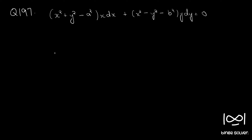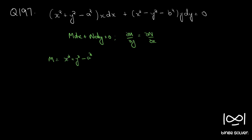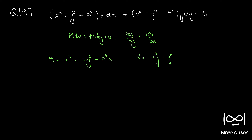The given equation is in the form M dx + N dy = 0. First we check whether the given differential equation is exact using the necessary and sufficient condition: ∂M/∂y = ∂N/∂x. Here M = (x² + y² − a²)x = x³ + xy² − a²x, and N = x²y − y³ − b²y.